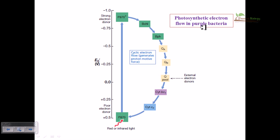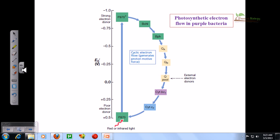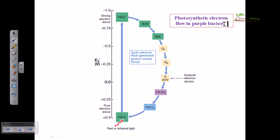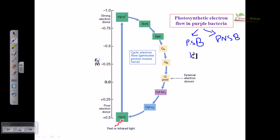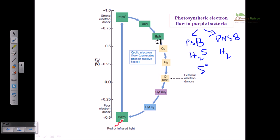One is the purple sulfur bacteria (PSB) and another one is the purple non-sulfur bacteria (PNSB). The purple sulfur bacteria can obtain electrons from H2S or sometimes from elemental sulfur, but PNSB can obtain electrons from hydrogen compounds or hydrogen, for example.